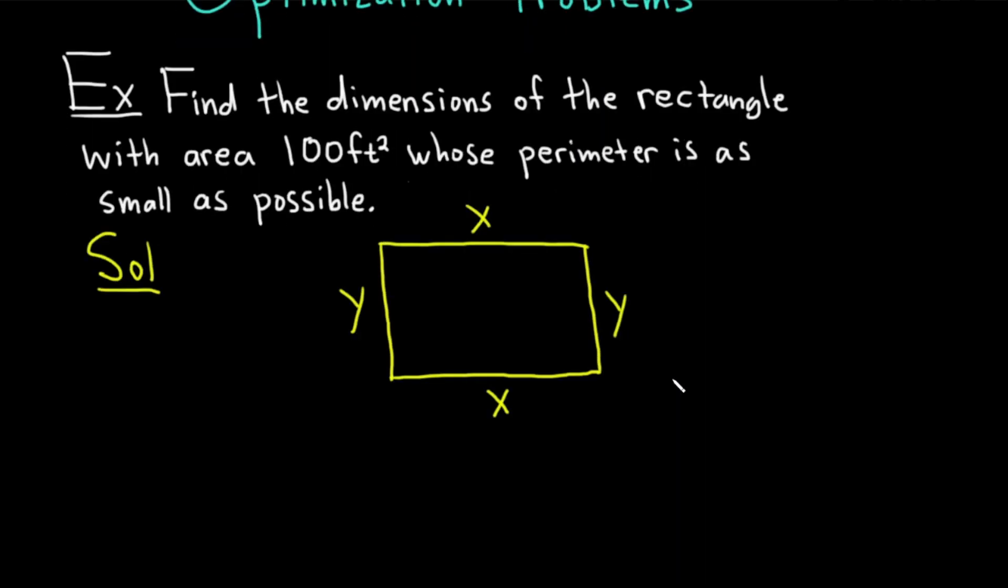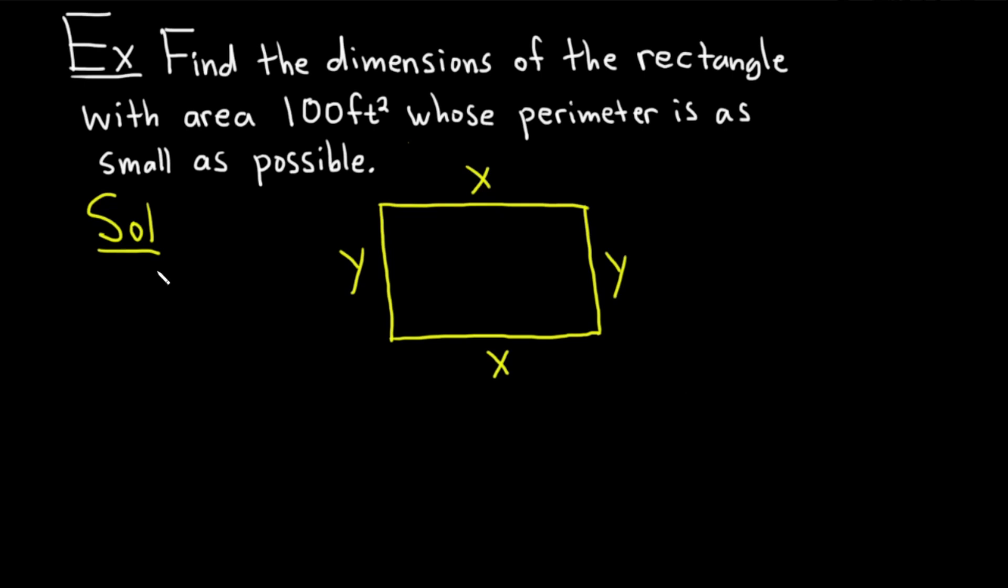Now that we have our picture, let's write down what we're given in the problem and what we need. We're given some important information. It says find the dimensions of the rectangle with area 100 feet squared. So we're told that the area is equal to 100. But the area is equal to the length times the width. That means that x times y is equal to 100. I'm going to put that in a box because we're going to be using that.